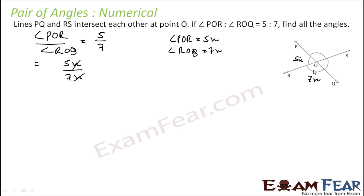We need to find all the angles. By observation, the vertically opposite angle of ROQ (which is 7x) will also be 7x, and the vertically opposite angle of POR (which is 5x) will also be 5x. Since these two adjacent angles form a linear pair: 5x plus 7x equals 180 degrees, so 12x equals 180, giving x equals 15 degrees.